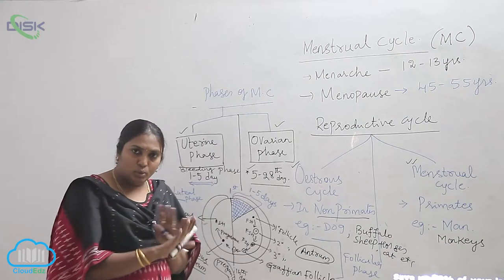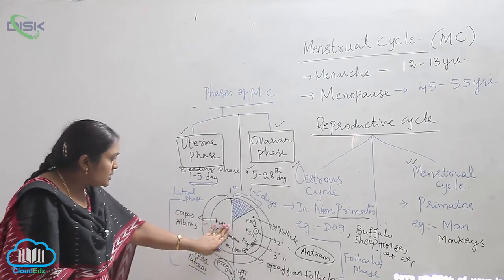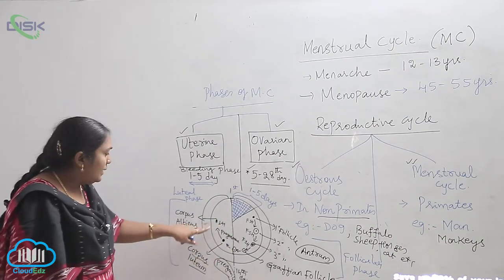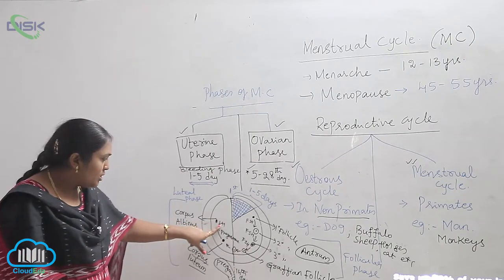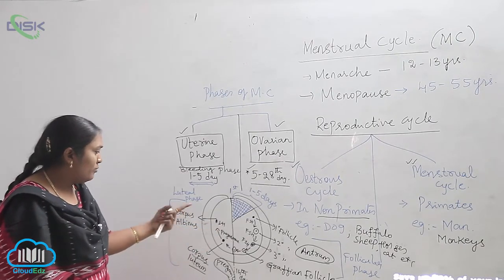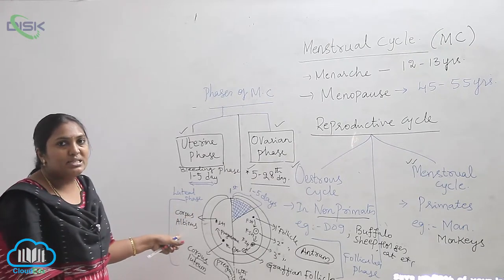If fertilization does not occur, immediately this hormone will not be there and luteinizing hormone will play a vital role, and corpus luteum will be changing into corpus albinus.